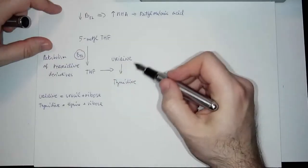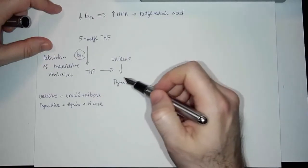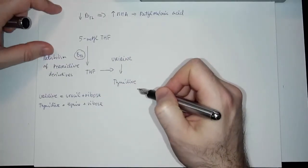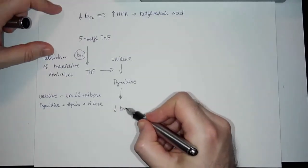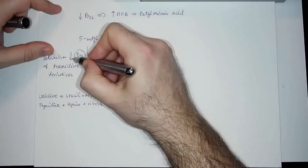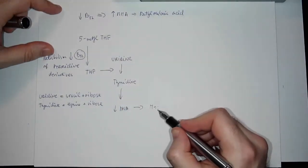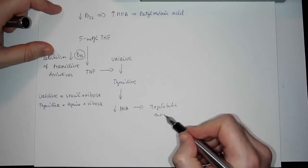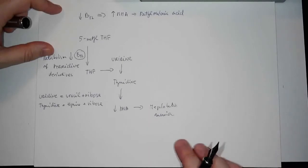In case I don't have B12, I won't have enough THF, and that's why I'll have decreased production of thymidine and decreased production of DNA. You see this relation.